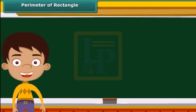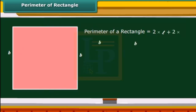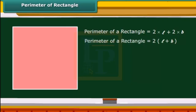Let us now calculate the perimeter of a rectangle. A rectangle is a 4-sided geometric figure whose opposite sides are equal. Therefore, the perimeter of a rectangle is twice its length plus twice its breadth. We can rearrange this and say that the perimeter of a rectangle is twice the sum of its length and breadth.